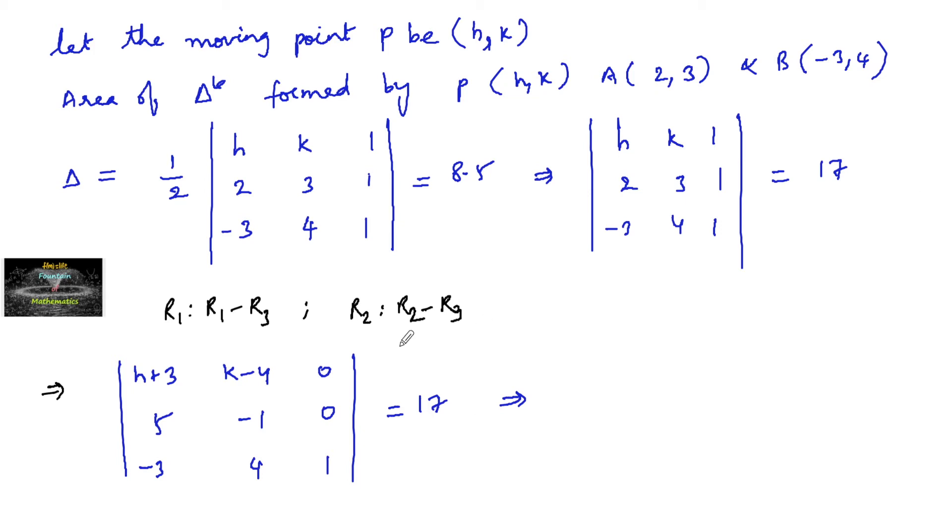Now you can find the determinant by eliminating your this last row and last column. And so that we can find H plus 3 of minus 1 or minus of H plus 3, minus 5 times of K minus 4, is equal to 17.